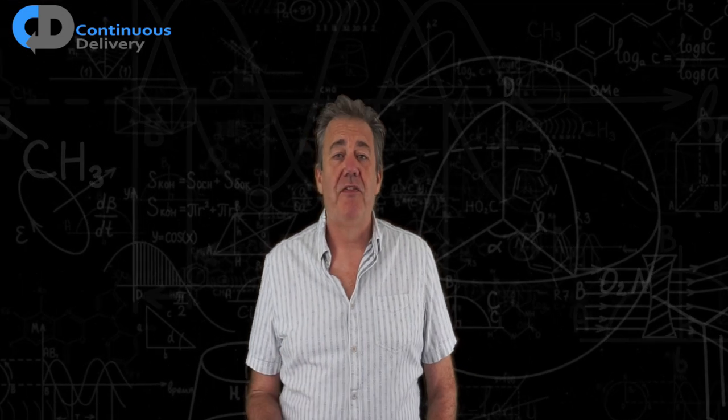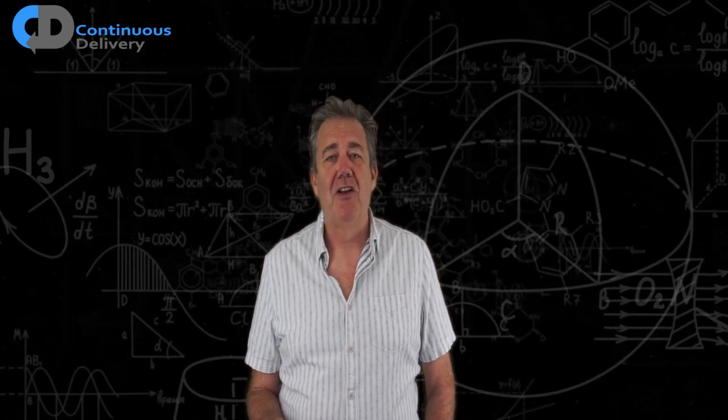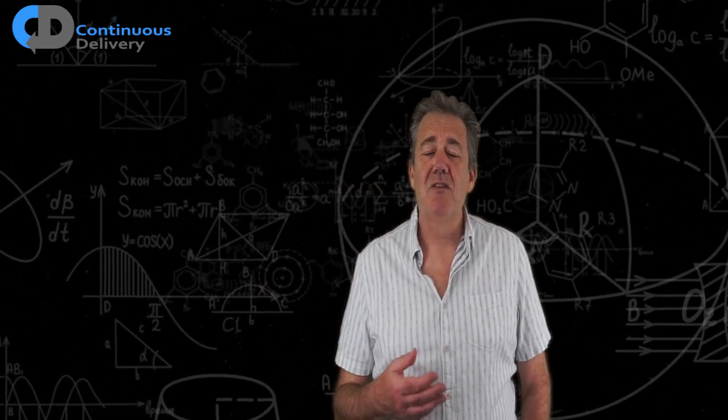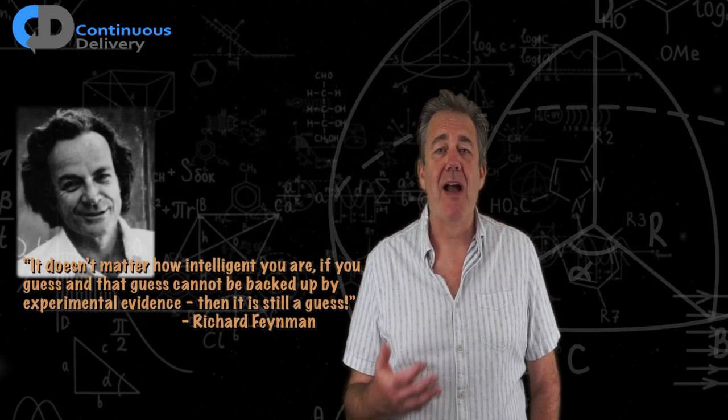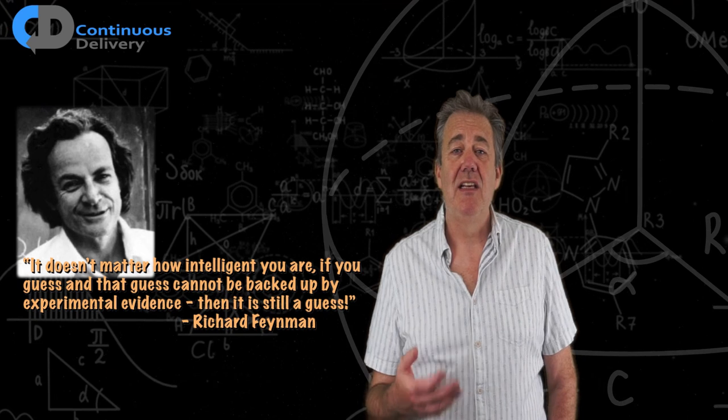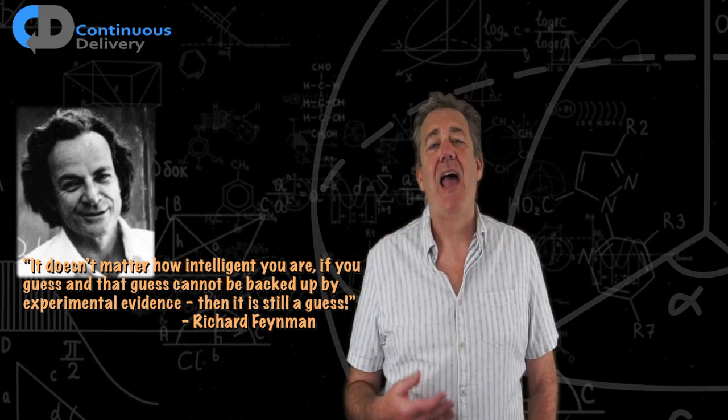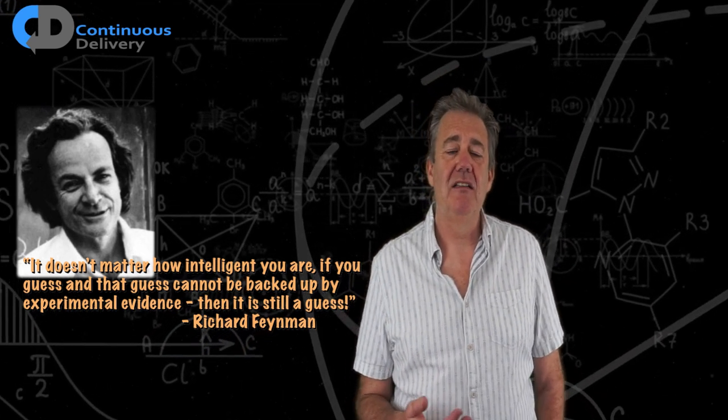In one of Feynman's most beautiful insights about the philosophy of science, he once said that it doesn't matter how intelligent you are, if you guess and that guess can't be backed by experimental evidence, then it's still only a guess. How can we apply that kind of thinking to software development?